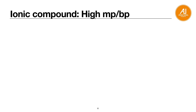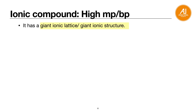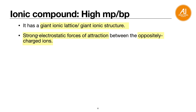Ionic compound has high melting and boiling point. First point: it has a giant ionic structure. Second point, the bonding: strong electrostatic force of attraction. Third point, the particles: between oppositely charged ions. That's why it's called an ionic compound — because there are ions inside.